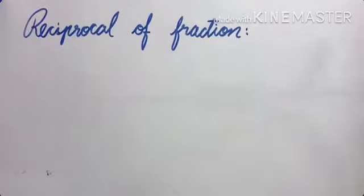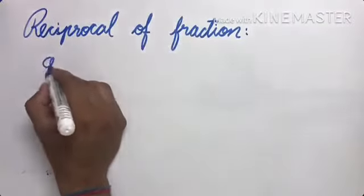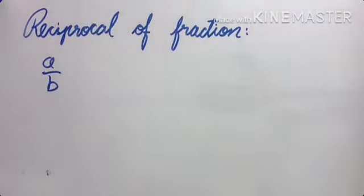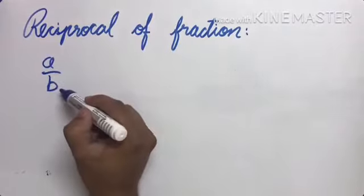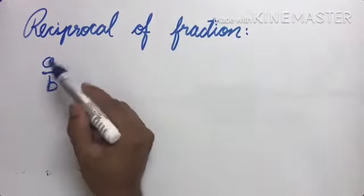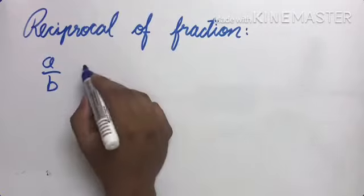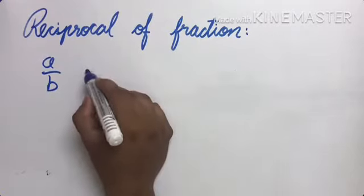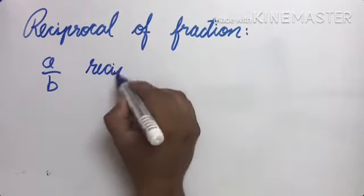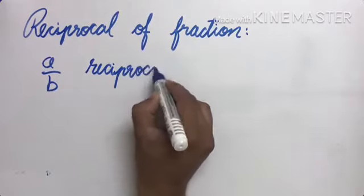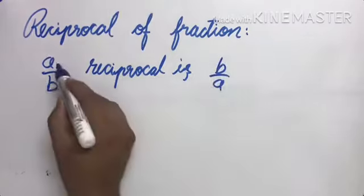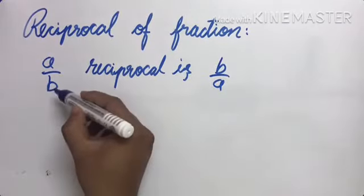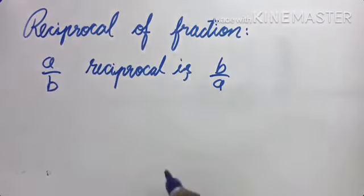Reciprocal का मतलब — जो भी numerator में दिया है वो denominator में चले जाएगा और जो भी denominator में दिया है वो numerator में चले जाएगा। Reciprocal is b by a — जो भी numerator है उसको denominator में और denominator को numerator में जाने देना।